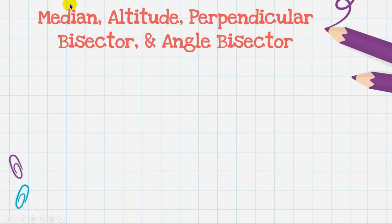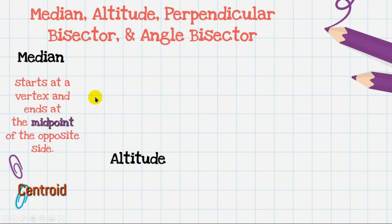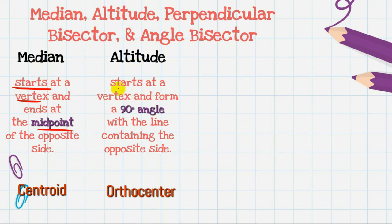What are the differences and similarities between median, altitude, perpendicular bisector, and angle bisector? For the median: it starts at a vertex and ends at the midpoint of the opposite side. The point of intersection of all medians is called the centroid. For the altitude: it also starts at the vertex, but it must form a 90-degree angle with the opposite side. The point of intersection of all altitudes is the orthocenter.